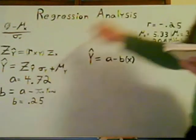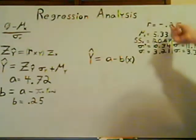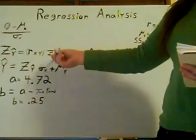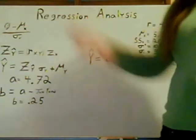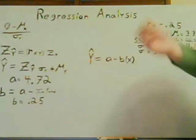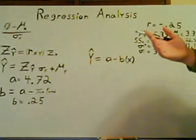So, you just plug in, in this case, negative .25 times your z of X, which hey, you just found up here. When you calculate that out, you should get .41.